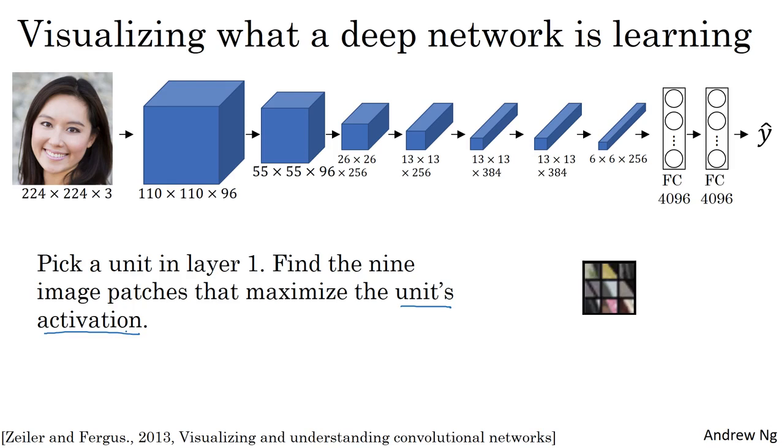So if you visualize, if you plot what activated that unit's activation, it makes sense to plot just a small image patch because that's all of the image that that particular unit sees. So if you pick one hidden unit and find the nine input images that maximizes that unit's activation, you might find nine image patches like this. So it looks like in the little region of an image that this particular hidden unit sees, it's looking for an edge or a line that looks like that.